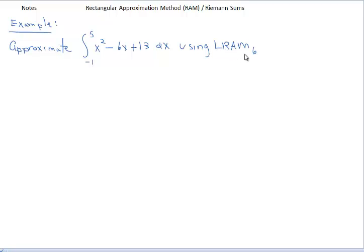We're using a left RAM with 6 subdivisions. This 6 indicates how we want to partition — divide up — the x values from negative 1 to 5. Negative 1 is our lower bound, which we call A. This 5 is our upper bound, B. So this goes from x equals negative 1 to x equals 5. We're going to approximate the region between this curve and the x-axis using rectangles on the left side — 6 of them.